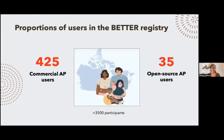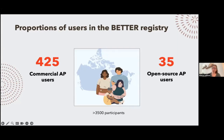To give a notion of users in the BETTER registry: as of now, over 3,500 participants, we have 425 commercial AP users and 35 open source AP users in all of Canada.